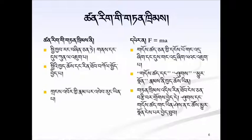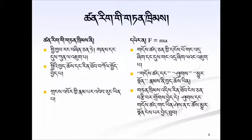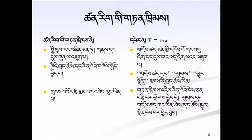Consider again Newton's second law of motion: force equals mass times acceleration. This law applies to any object with mass at any time, at any place in the universe. The variables in it — F, M, and A — stand for force, mass, and acceleration. These are properties of an object.